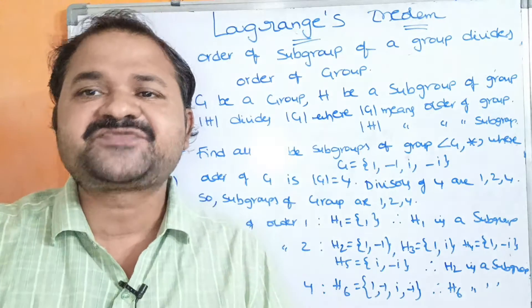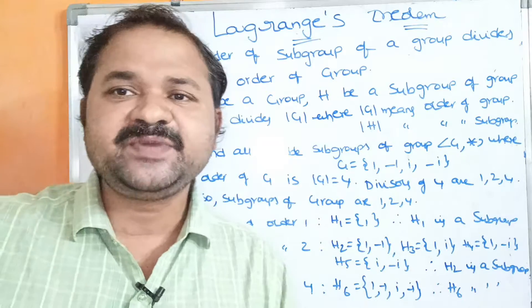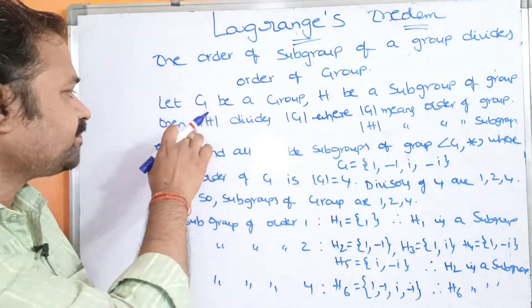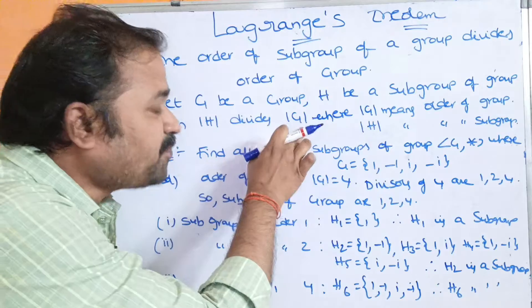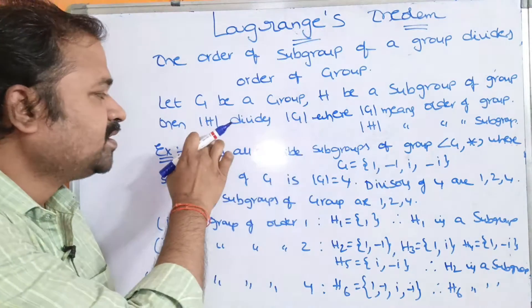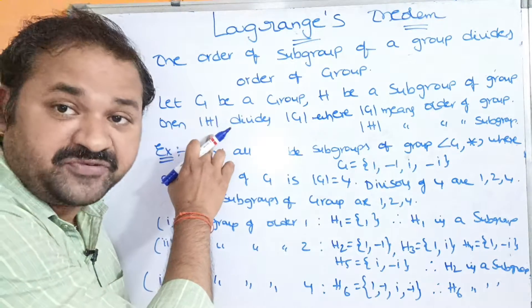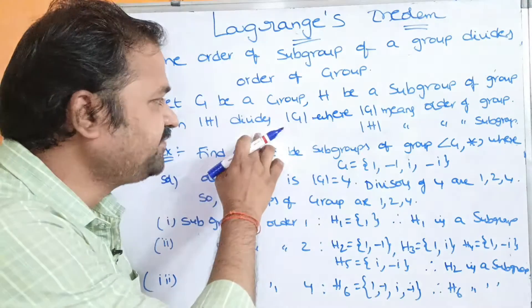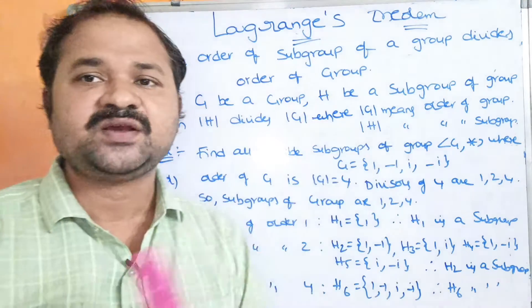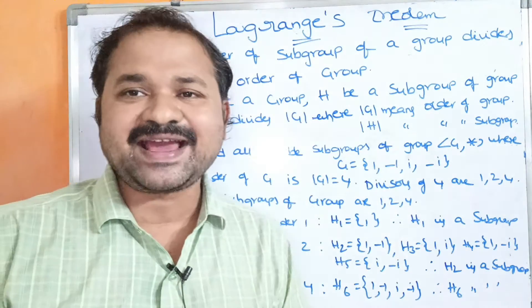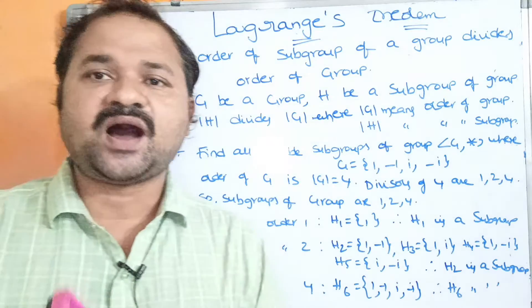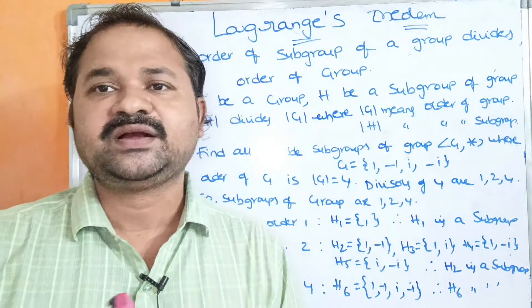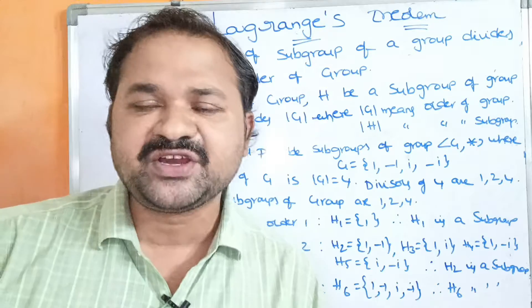For example, if G contains 4 elements, then mod G equals 4. So mod H divides mod G means the order of the subgroup divides the order of the group. This is Lagrange's algorithm.